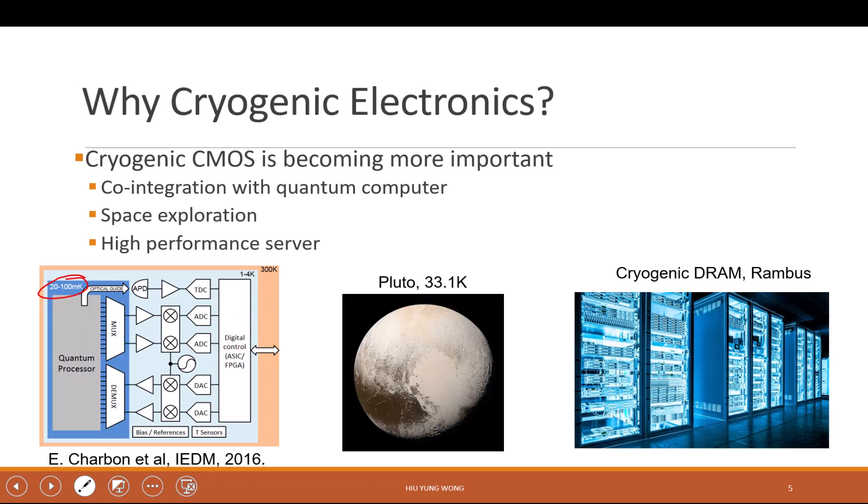Another is space exploration. We have more presence in space now. For example, on top of Pluto, it's like 33.1 Kelvin. When you send a robot there, how can you ensure your electronics is working? Do you know how they ensure it is working nowadays? They actually carry a radioactive isotope to do the heating. Now, all the important electronics you send to space, they actually put an isotope which is long-lasting, keep heating up the electronics so that it is at room temperature. This is not desirable. Expensive. What if our electronics can work at that low temperature? Then you don't need that.